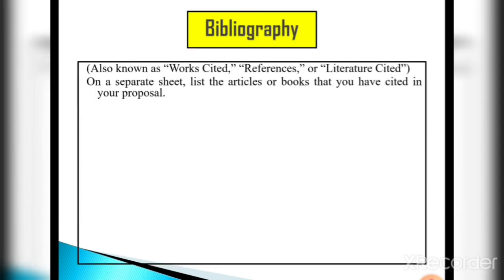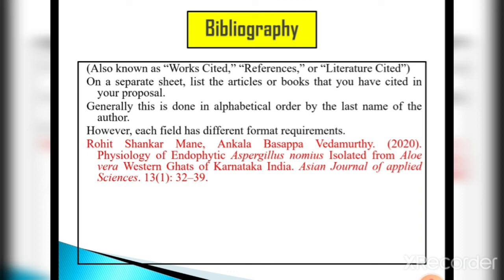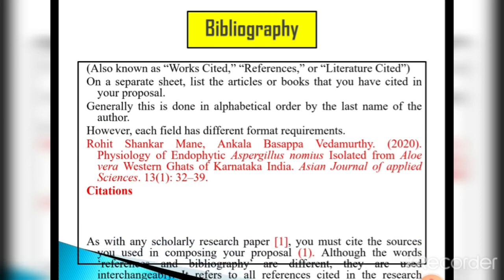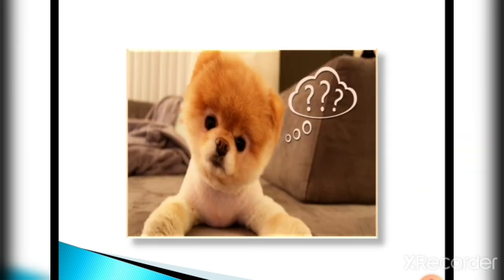Bibliography, also called references or literature cited, is where we cite references in our research paper at the end. For example, the citation format includes: author names — Rohi Shankamane, Ankala Basappa, Vedamurthy — then the published year 2020, then the title of the paper 'Physiology of Endophytic Aspergillus nomiae Isolated from Aloe vera, Western Ghats of Karnataka, India,' then the journal name Asian Journal of Applied Sciences, volume 13, issue 1, page numbers 32 to 39. Different citation formats may be required depending on the journal. If you have any questions, comment or message me. Thanks a lot.